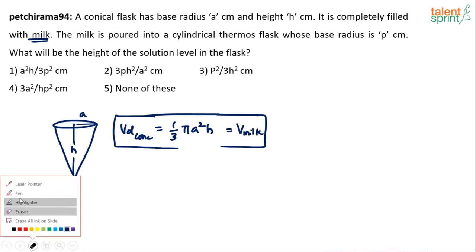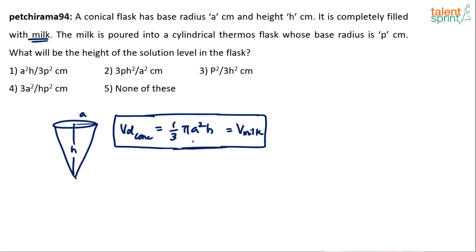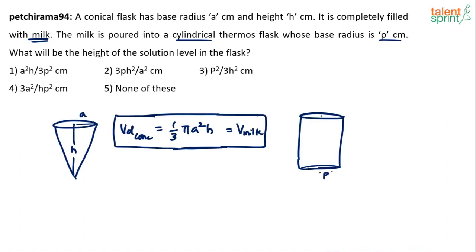Now, this milk is taken and poured into a cylindrical flask whose base radius is p centimeter. When you pour this milk into the cylindrical flask, it occupies up to a certain level. Let's assume that height is h. So what is that height h — that's the question.